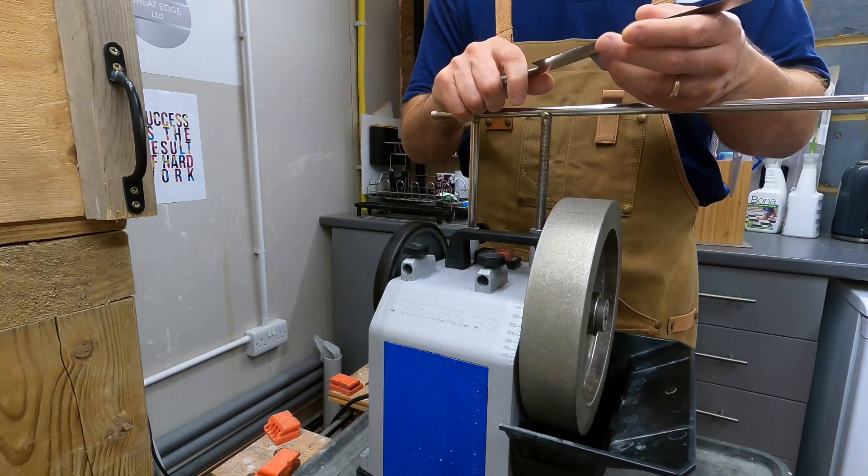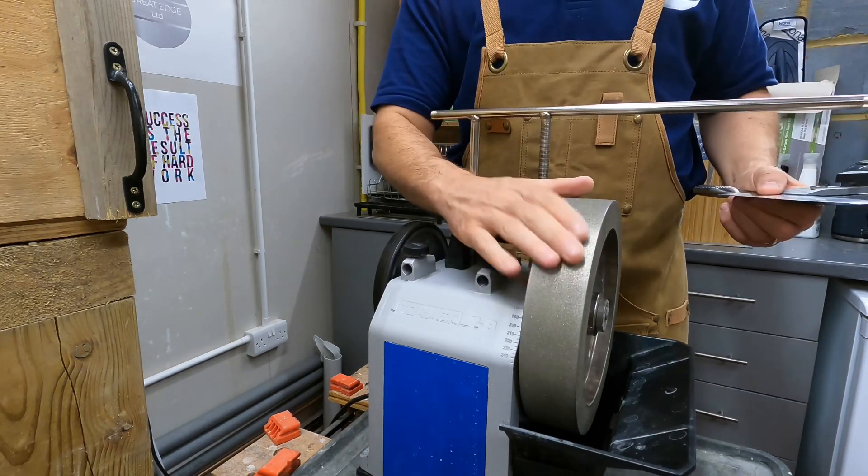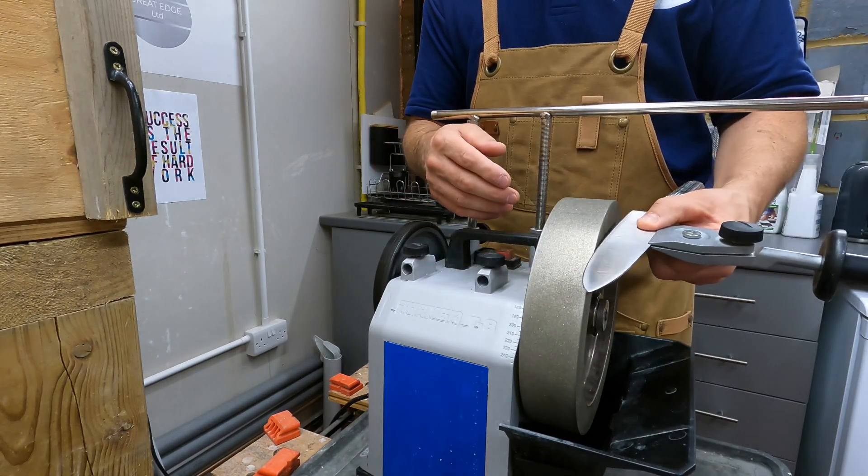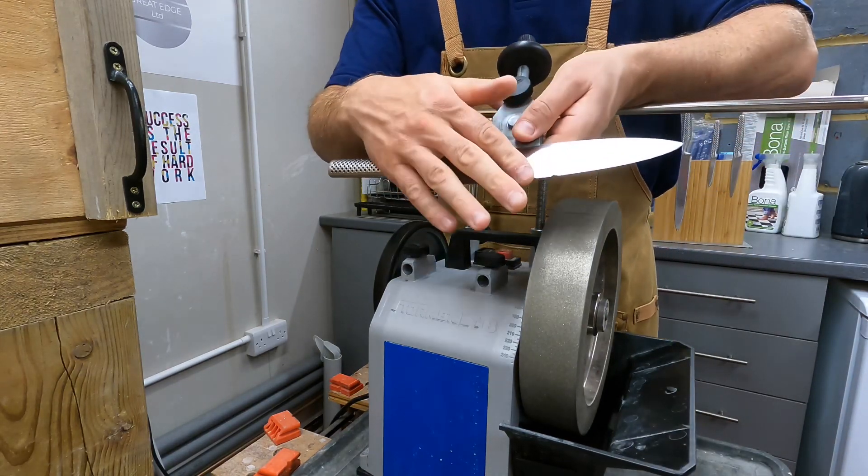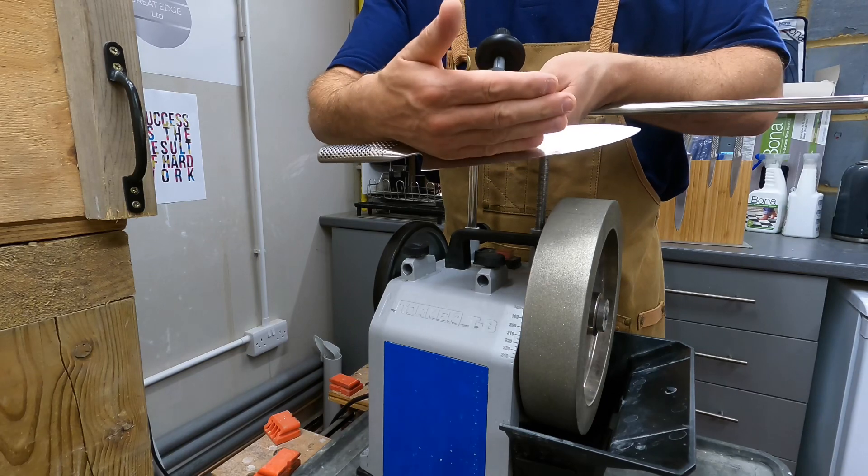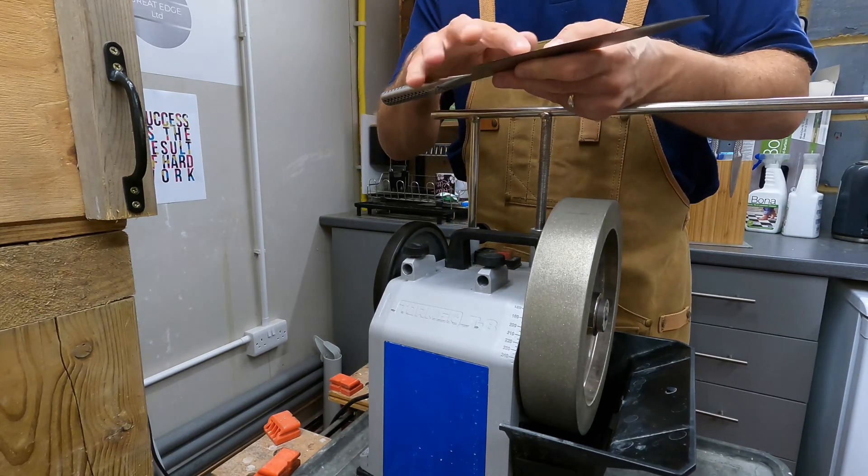To get this chip out, once upon a time I used to use the side. I've got a CBN 80 on here and I used to use the side of the CBN wheel and just grind it off. But what I found was if I've gone down flat and cleared the chip by coming up flat, it was just a bit too extreme.